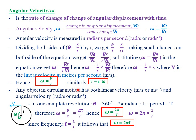Any object in circular motion has both a linear velocity in meters per second and an angular velocity in radians per second. The linear velocity always acts along the tangent, and the angle between the tangent and the radius is always 90 degrees.